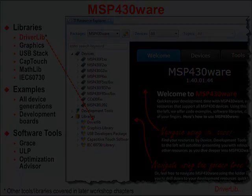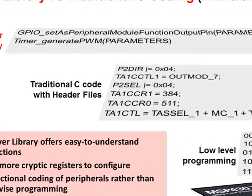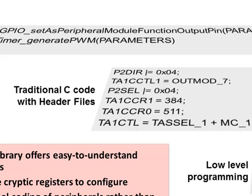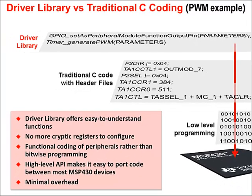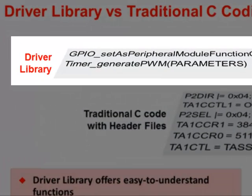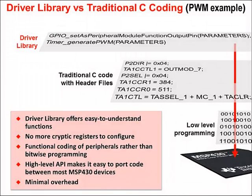Here's an example of driver library versus traditional coding. The more traditional way on MSP430 devices is to use the header files. Every single MSP430 device ships with a header and linker command file that define every register and every bit in every register. The driver library is a set of functions that allow you to control peripherals from an API. We've worked hard to keep this API as minimal overhead as possible — lean and mean — but what we really like is the readability and ease of use of the driver library.